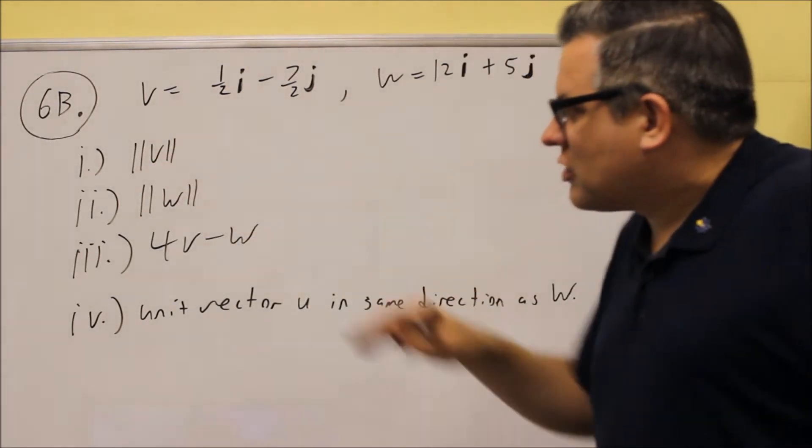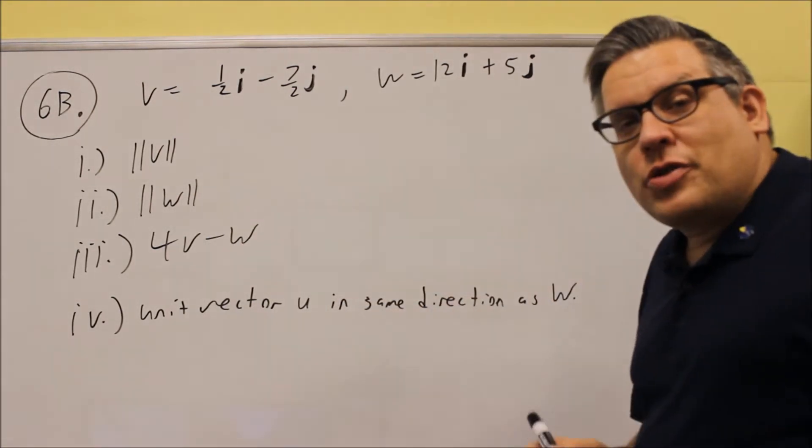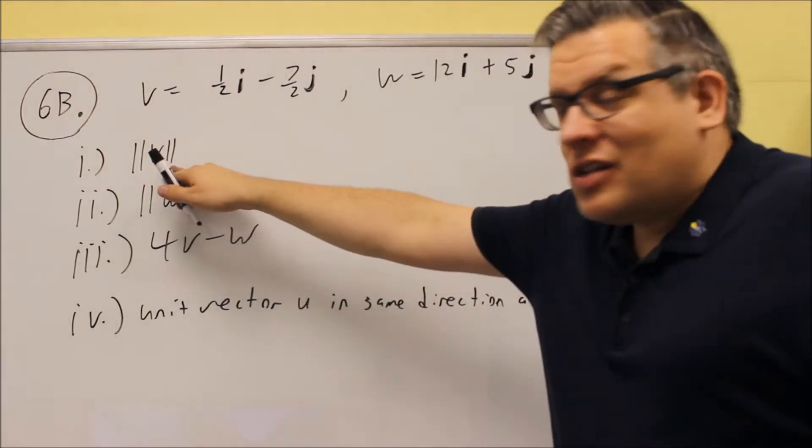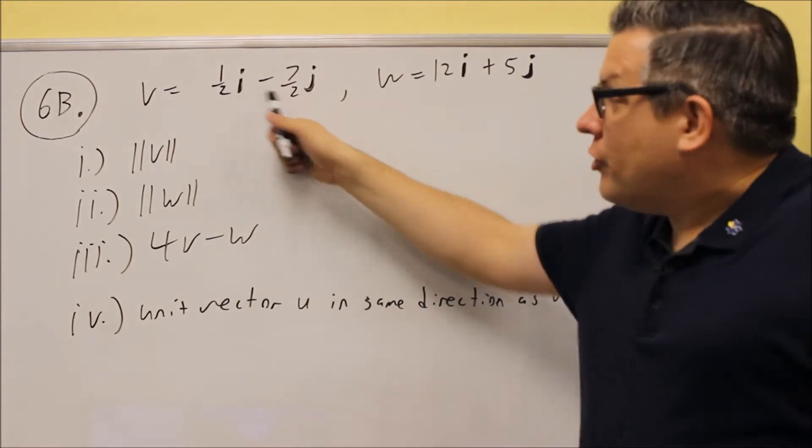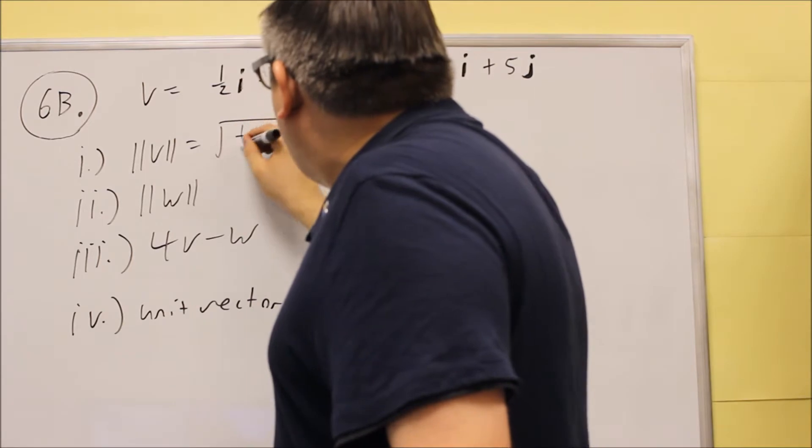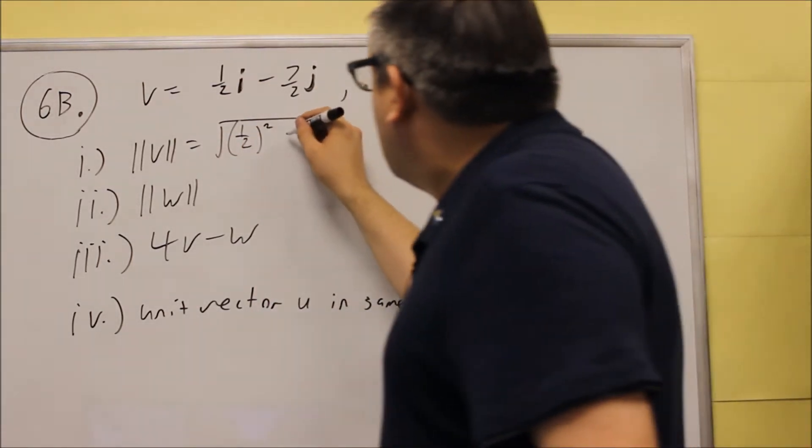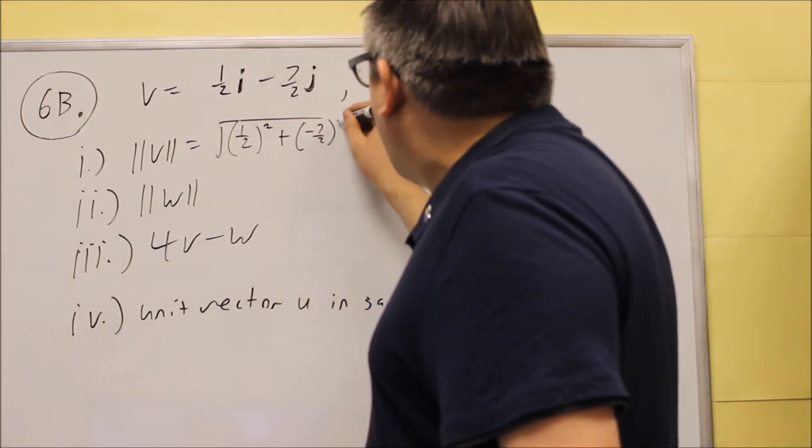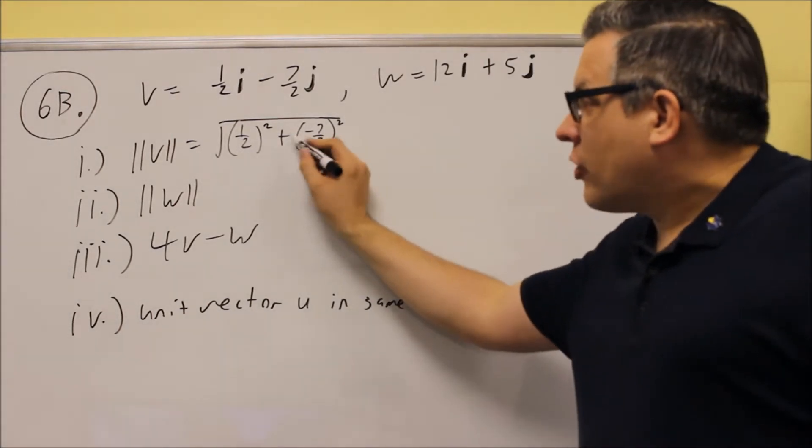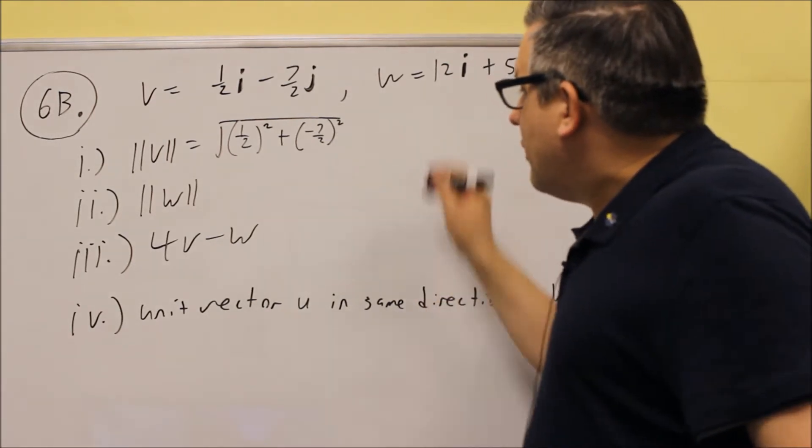For the first part, that notation means you're talking about magnitude, which means you want to do the square root of a squared plus b squared. Because you have a V inside, your a is going to be 1 half and your b is negative 7 halves. So let's put that into the formula and we will work that out.